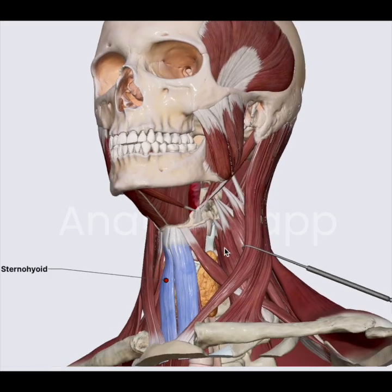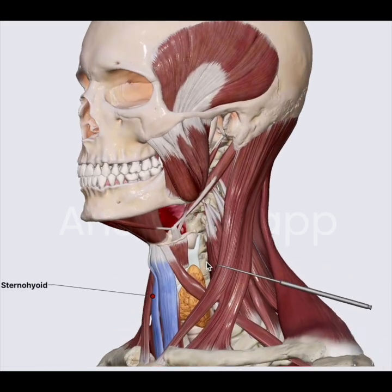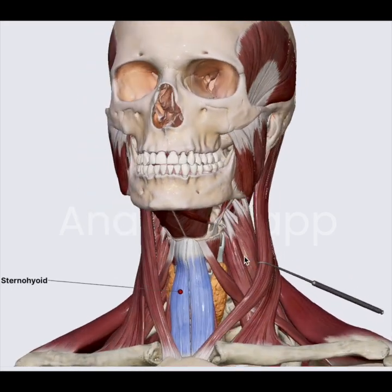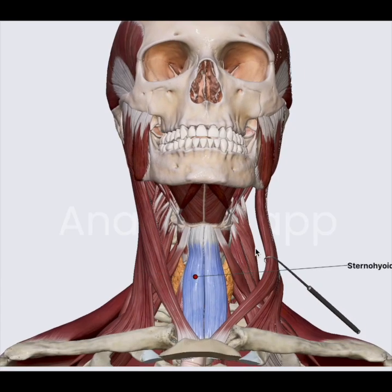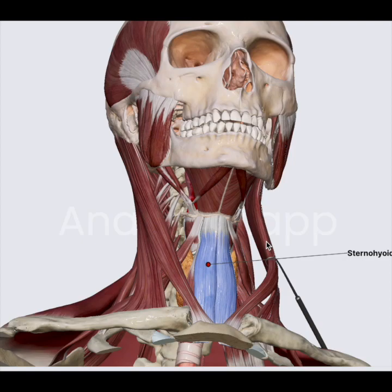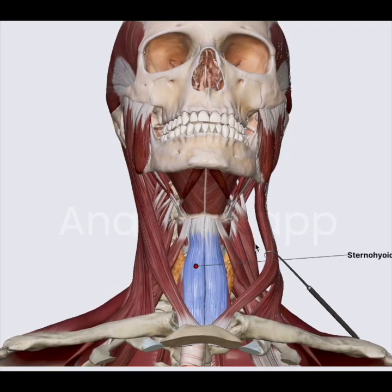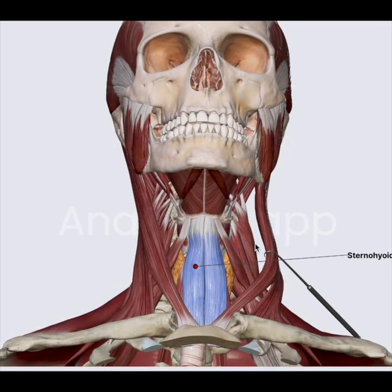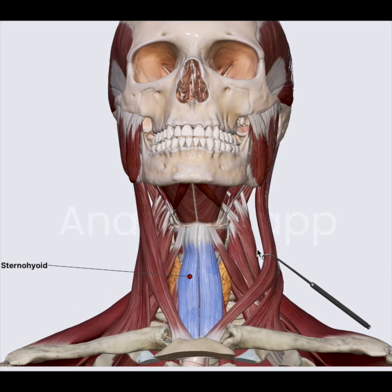It's like having names of quadruplets: sternohyoid, omohyoid, sternothyroid, and thyrohyoid. Generally speaking, the main function of all these muscles is positioning the hyoid bone and movement of the thyroid cartilage for laryngeal movement. They also help during vocalization, swallowing, and mastication.